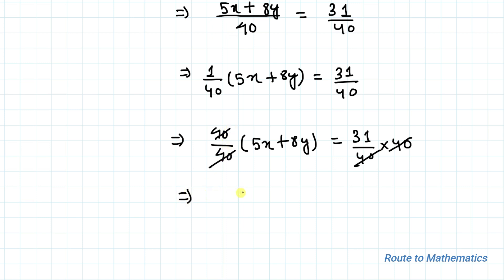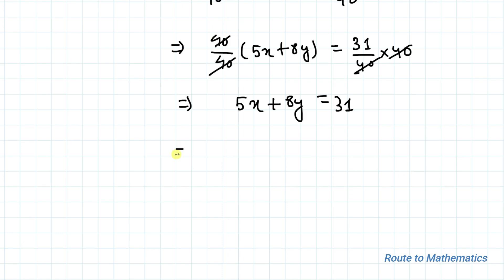So this implies we have 5x + 8y = 31. Then 8y = 31 - 5x. So this implies y = (31 - 5x)/8. Let's take it as equation 1.